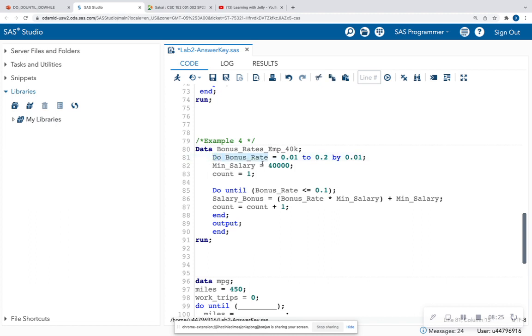So once again, I have do this bonus rate is 1% up to 20%. I changed it to 20. Increment by 1%. My minimum salaried employees is $40,000. And then I'm going to initialize my i. In this case, i is counts. So I'm going to keep track of every time my loop runs. I want to do this until my bonus rate, let's say less than or equal to 20%. I want to create a new column that's going to be my salary plus the bonus. And then I want to add one to my count. And I want to output both of these do loops. So let's go ahead and run this.